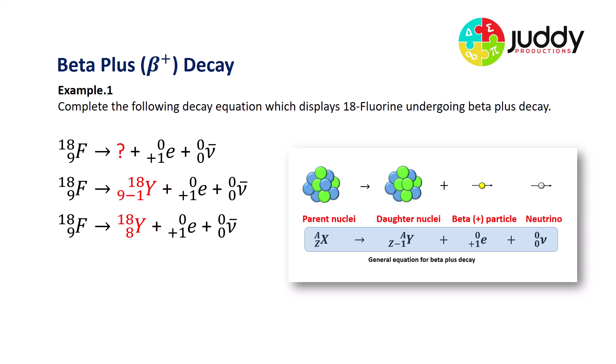We check our periodic table and atomic number of eight tells me we're looking at an oxygen nuclei. Oxygen 18.